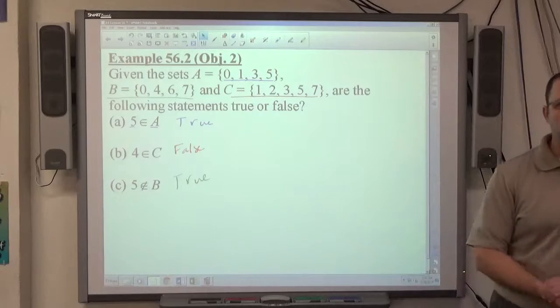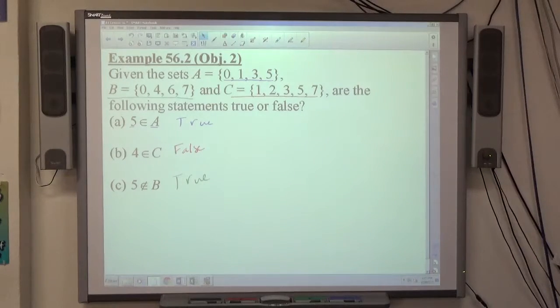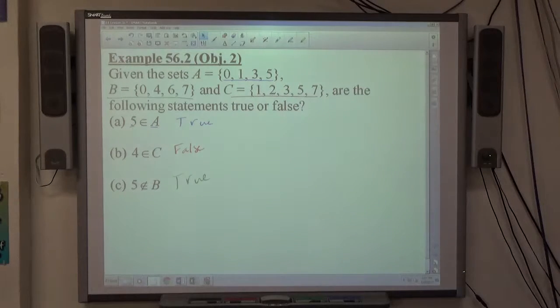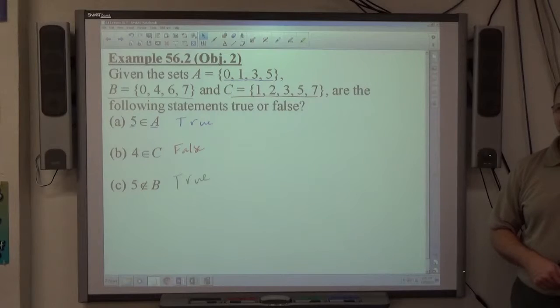So element of statements, true or false, pretty simple. If it's got the E, it means it's supposed to be there. If it's got the slash through, it means it's not supposed to be there. You can use your eyes to make the decision whether or not it is true or false.